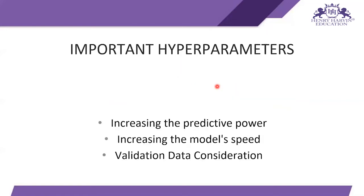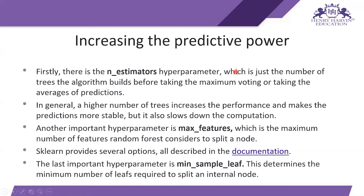Next come the important hyperparameters, grouped into three categories: increasing the predictive power, increasing the model speed, and validation data consideration. These are the three important hyperparameter categories you can use to increase the model accuracy. The first is the number of decision tree models you want to use as a single model.